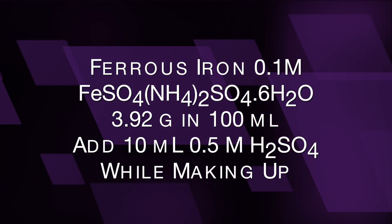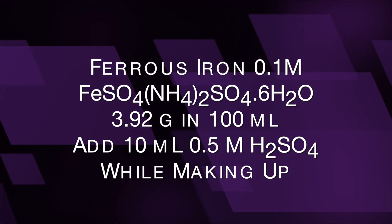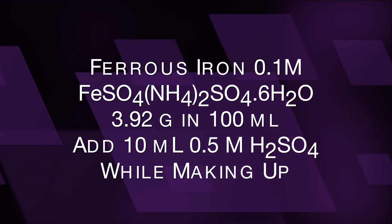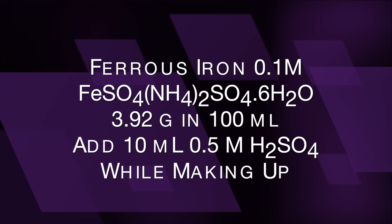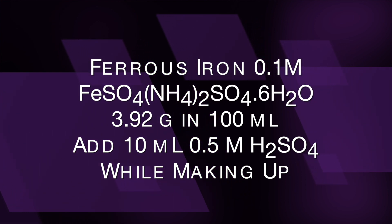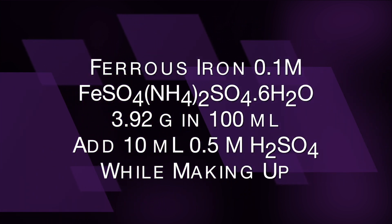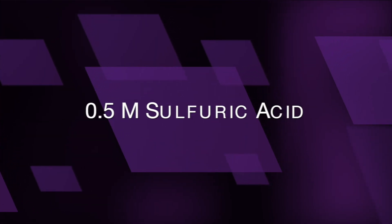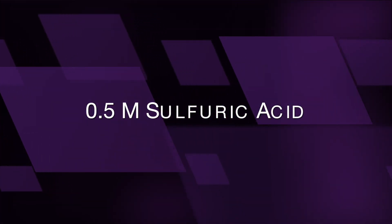A 0.1 molar ferrous ammonium sulfate solution, which can be obtained by dissolving 3.92 grams in 100 millilitres of solution. Add 10 millilitres of 0.5 molar sulfuric acid to this solution. And lastly, you will need a 0.5 molar sulfuric acid solution.